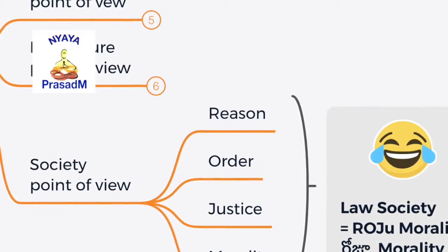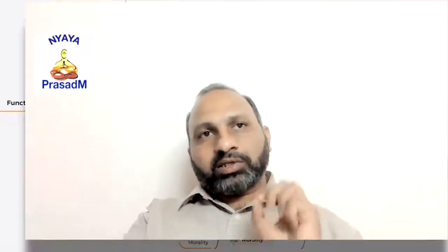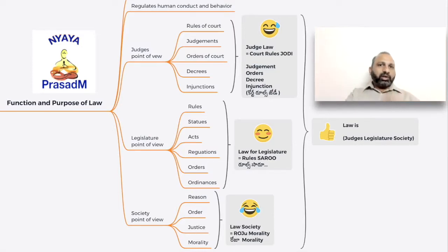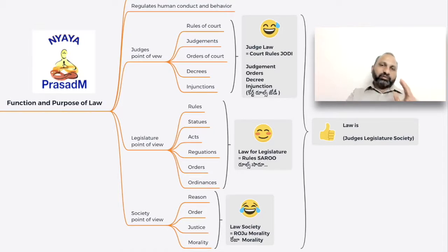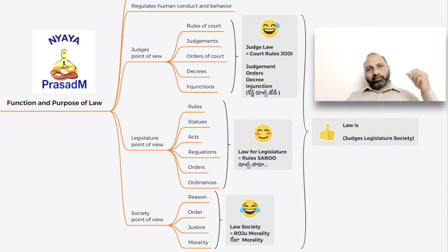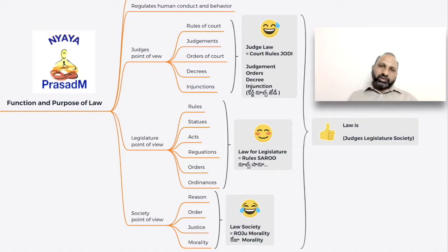To summarize the entire function and purpose of law: it moves around judges, legislature, and society. Law is Judges, Legislature, Society. This primarily regulates human conduct and behavior — the way people behave and deal with each other. There are multiple rules and principles set around to do this, but all these things have been seen from different perspectives within the society in their own particular terminology. These particular perspectives are judges, legislature, and society.